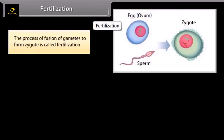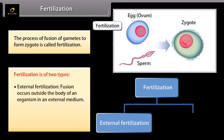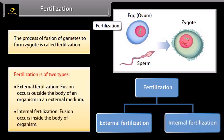The process of fusion of gametes to form a zygote is called fertilization. Fertilization is of two types: external fertilization, where fusion occurs outside the body of an organism in an external medium, and internal fertilization, where fusion occurs inside the body of the organism.